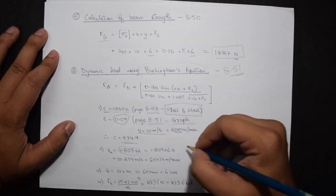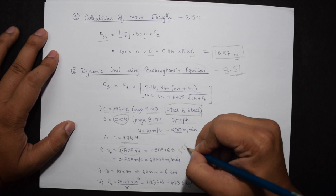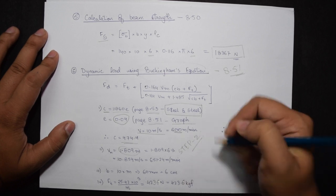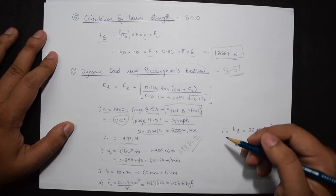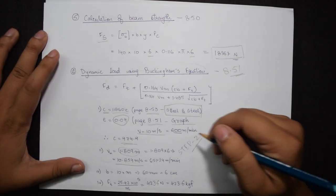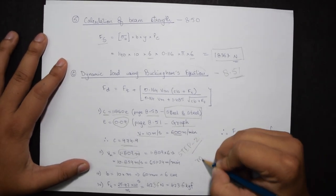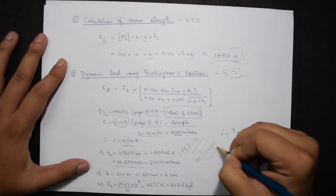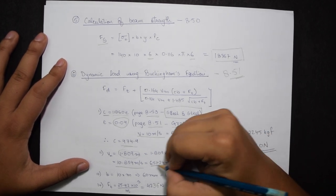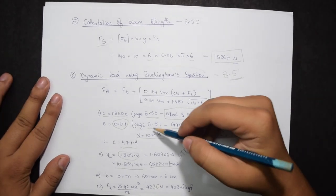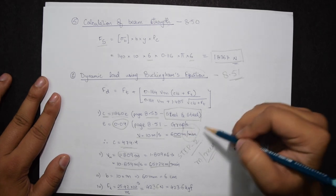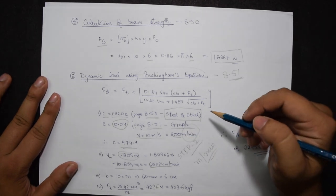M is 6, therefore my value becomes 10.854 meters per second. But I need to remember that this formula will take values only in meter per minute, therefore my value becomes 651.24 meters per minute. This happens because in the graph I saw that V was substituted as meters per minute only.